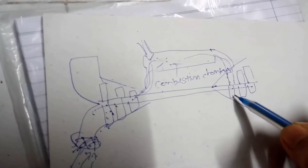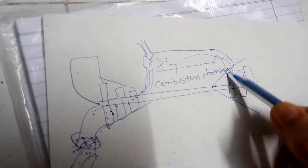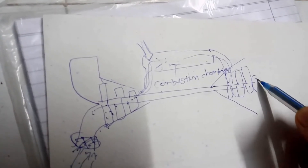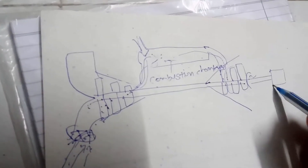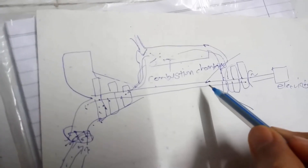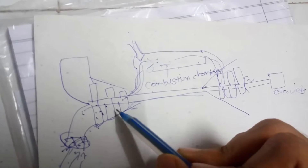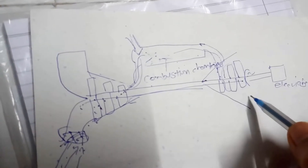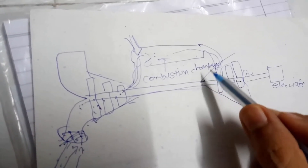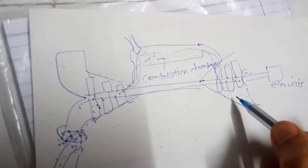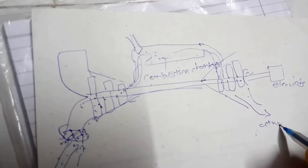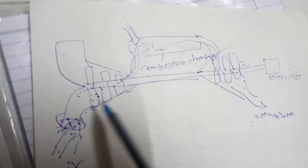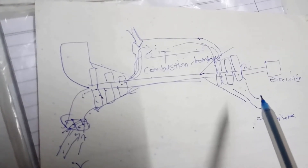After that, the gas rotates the turbine blades, and we use this energy to generate electricity. A larger part of the heat is used to compress the air. After it gets used, the gases get expanded here and then get ejected to the atmosphere. So this is the open cycle gas turbine power plant.